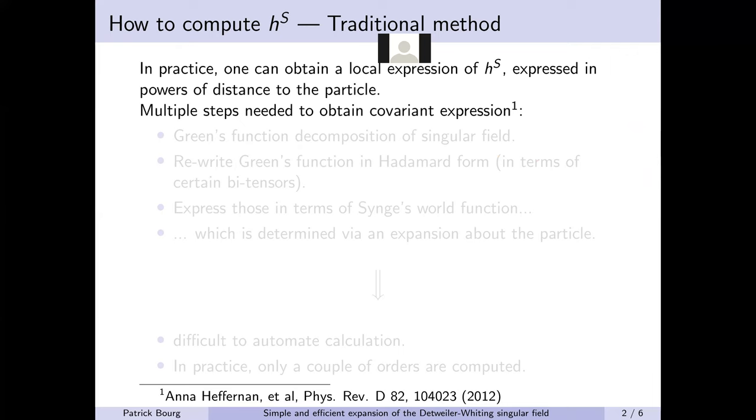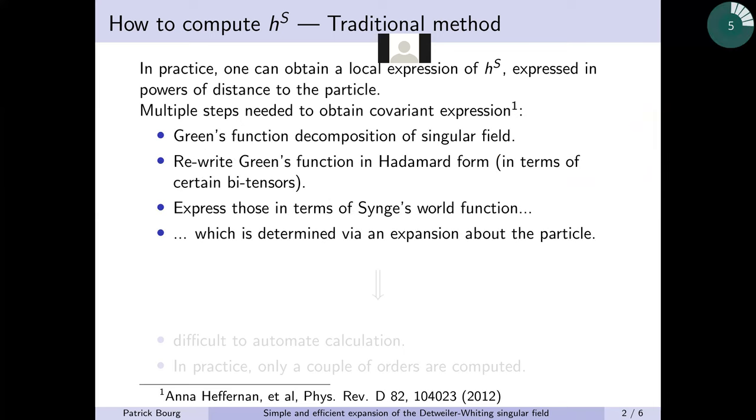The current method to do this involves many subtle steps to obtain a covariant expression. You effectively express your singular piece as an integral over some Green function. The Green function has to be rewritten in Hadamard form, which is expressed in terms of certain bitensors. These have to then be expanded in terms of another bitensor, which is called Synge's world function, which itself has to be expanded again about the particle.